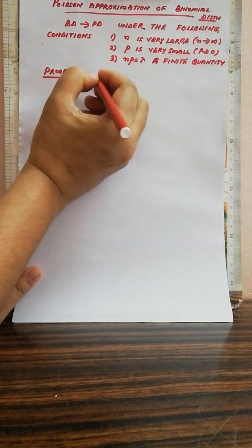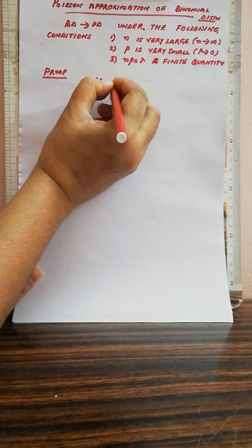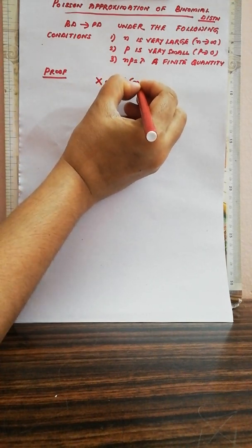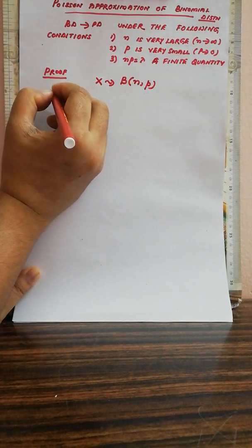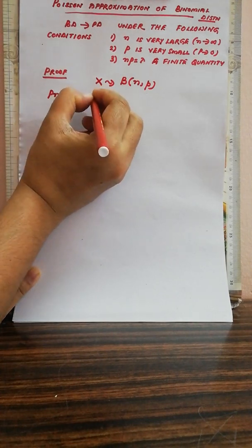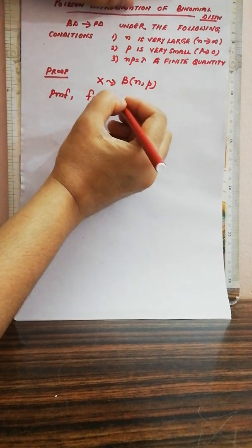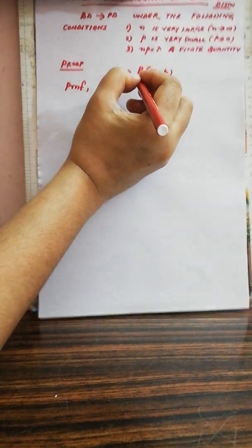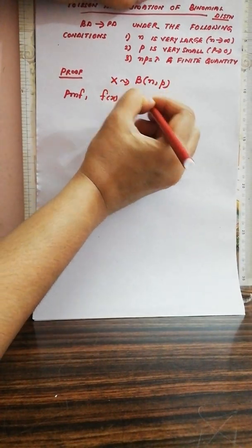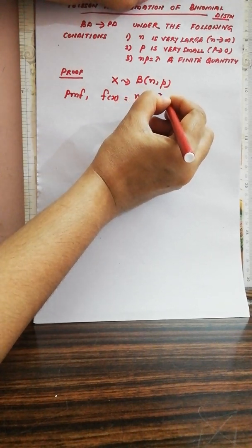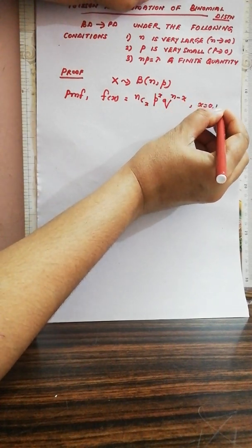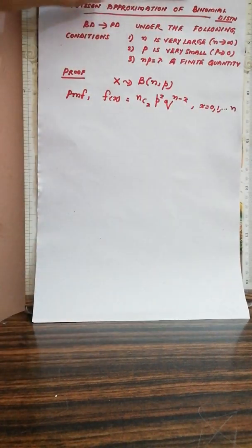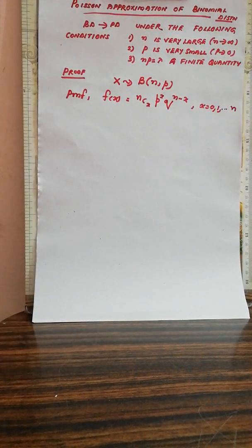Let X follow binomial distribution with parameter n and p, that is X follows B(n, p). Its PMF is: f(x) = nCx · p^x · q^(n−x), where x takes values 0, 1, 2, 3, up to n. This is the binomial distribution PMF.